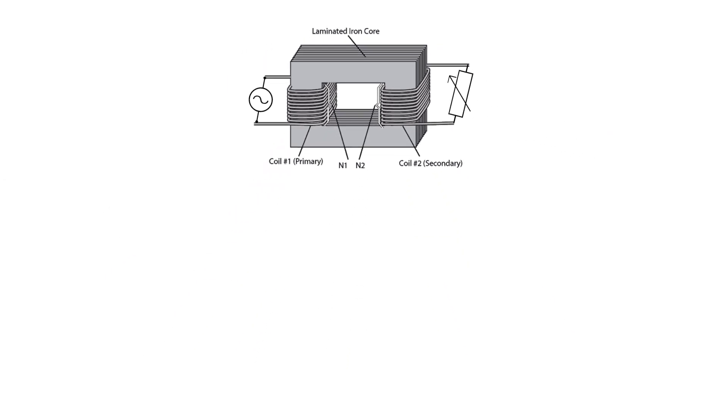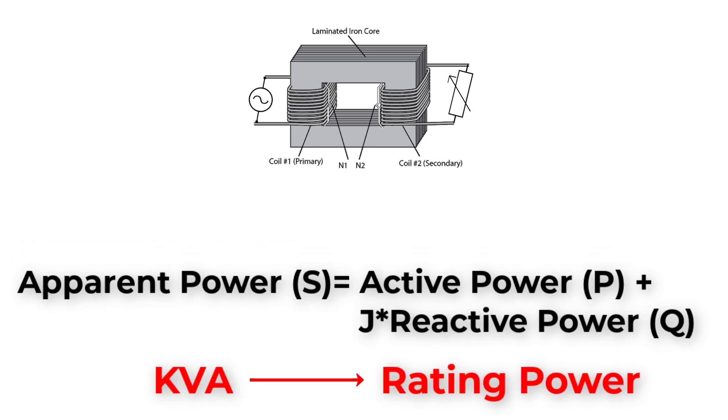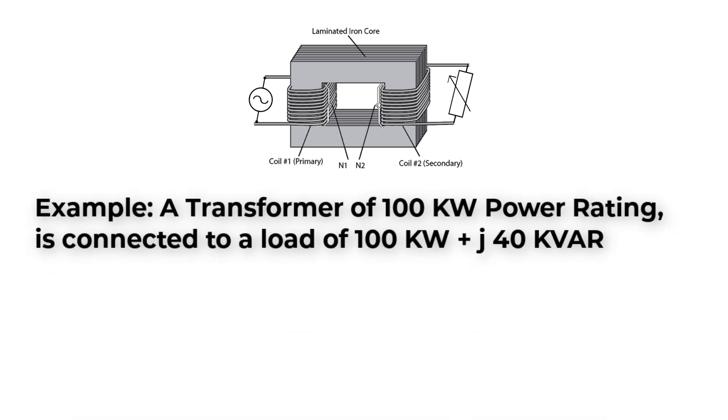So, in transformers, we will deal with the total power, which is kilovolt ampere, as the rating power. For more illustration, let's take an example. If we have a transformer with 100 kilowatt ratings, if the load now is consuming 100 kilowatt as active power, and 40 kilovar as reactive power,